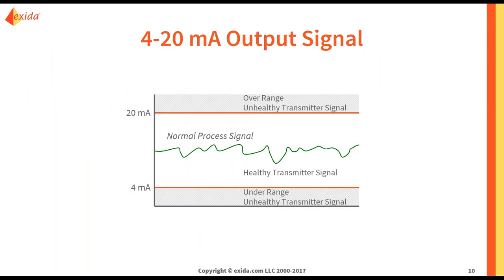As long as you are in that range of 4 to 20, you have a healthy signal. However, if you are over range or under range, you have an unhealthy transmitter signal which often indicates a failure. I am going to go through the different ways that your transmitter might fail internally and what that might look like.